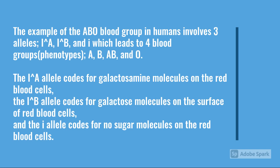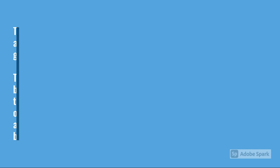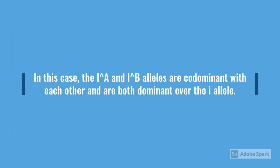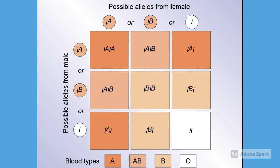The I^A allele codes for galactosamine molecules on the red blood cells, the I^B allele codes for galactose molecules on the surface of the red blood cells, and the I allele codes for no sugar molecules on the red blood cells. In this case, I^A and I^B alleles are co-dominant with each other and they are both dominant over the I allele. Although there are three alleles present in a population, each individual only gets two of the alleles from their parents, producing the genotypes and phenotypes shown in the figure.